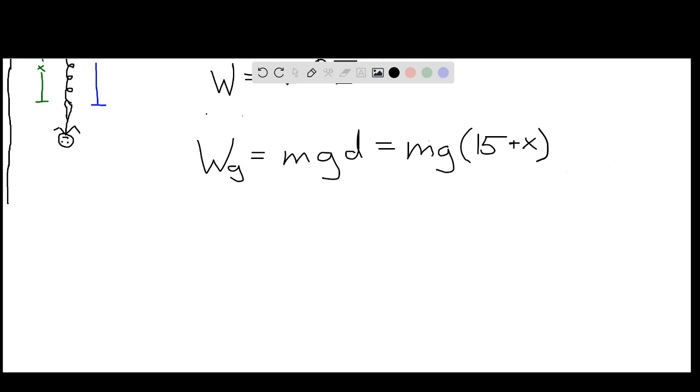The work done by the cord's spring force is given by negative one-half kx squared, where k is the spring constant and x is the amount that the cord is stretched.